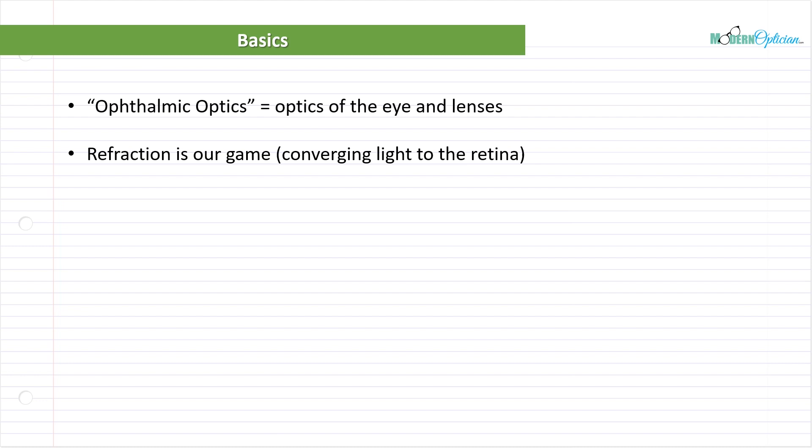I want you to think of refraction as being our game — converging light onto the retina. Refraction is a huge part of what we do. The eye refracts light to the retina, and lenses help refract light to the retina as well. So we're going to go into detail about normal vision, refractive error, and what lenses do. A basic principle is we deal with refraction — the bending or converging of light.